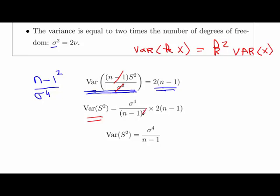(n minus one) squared, well, that square cancels out with n minus one. So what we're left with is two times sigma to the power of four all over n minus one.